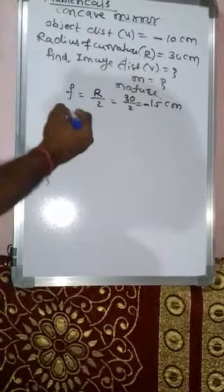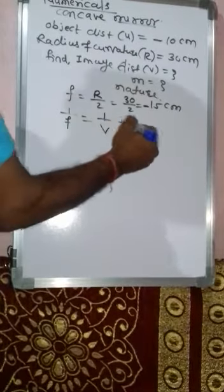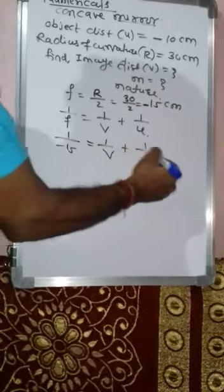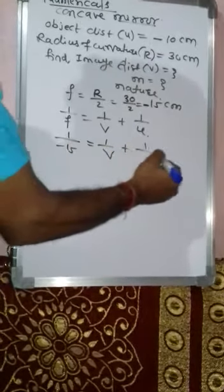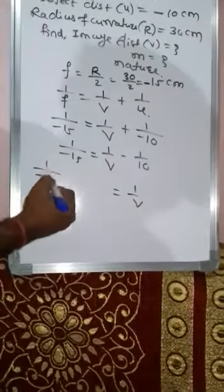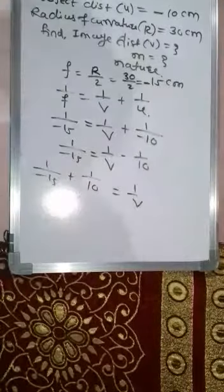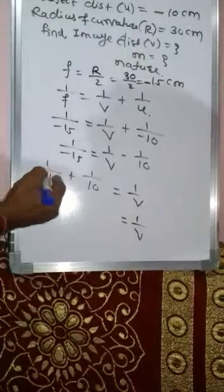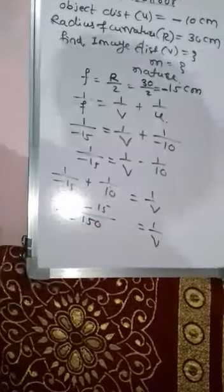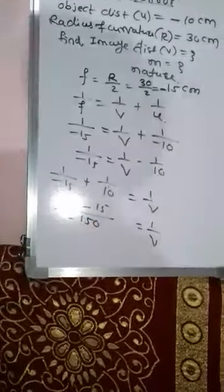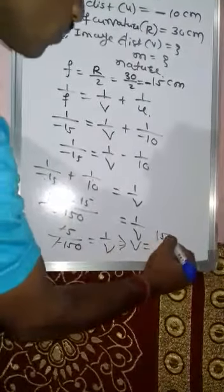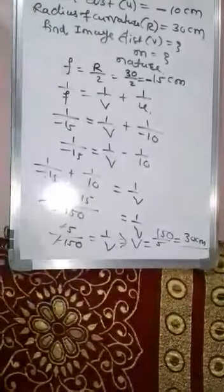We have to find image distance v using the mirror formula: 1/f = 1/v + 1/u. Here f is minus 15 and u is minus 10. So 1 by minus 15 equals 1/v plus 1 by minus 10. Taking 1 by 10 to the other side: 1/v equals 1 by minus 15 plus 1 by 10. Cross multiplying gives 10 minus 15 upon minus 150, giving minus 5 by minus 150. The minuses cancel, so v equals 150 by 5, which is 30 cm. So v is plus 30 cm.